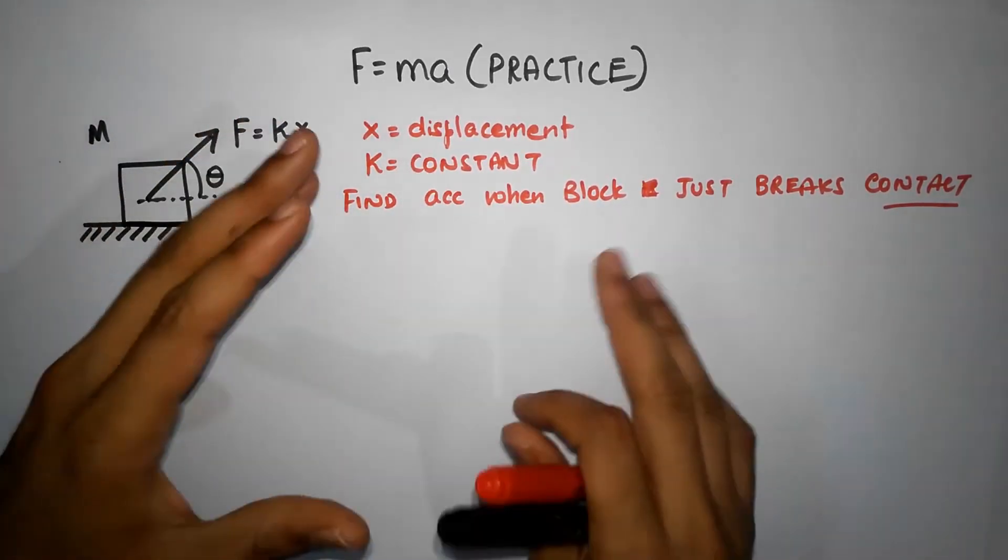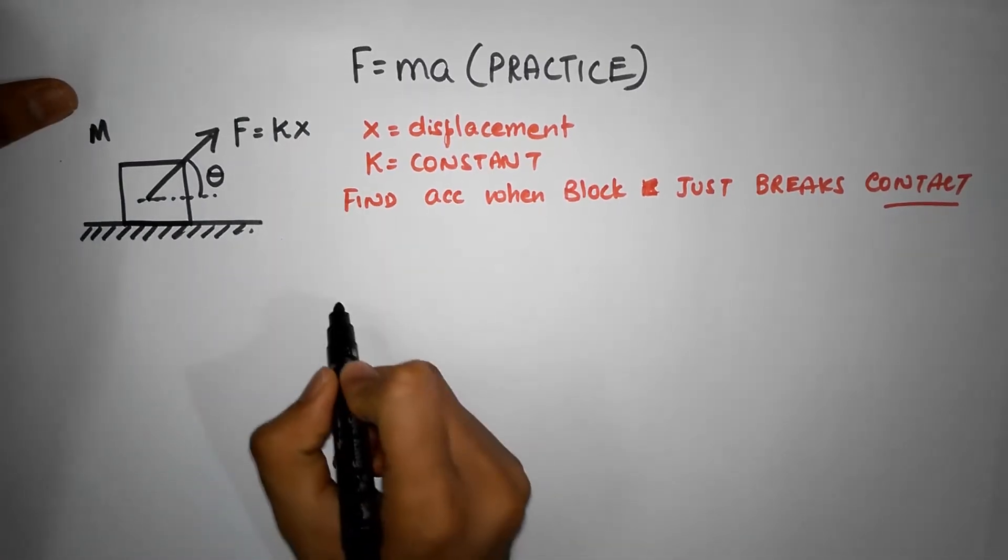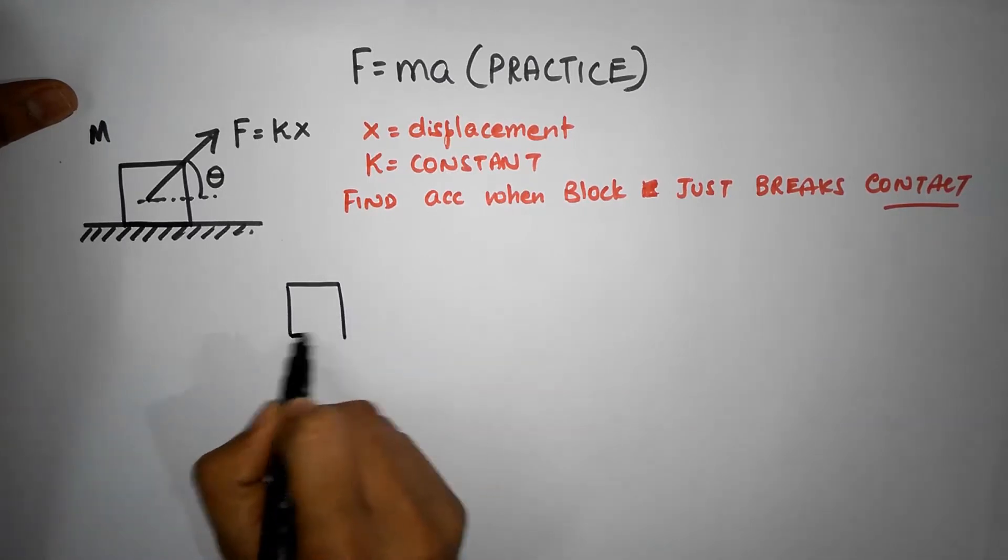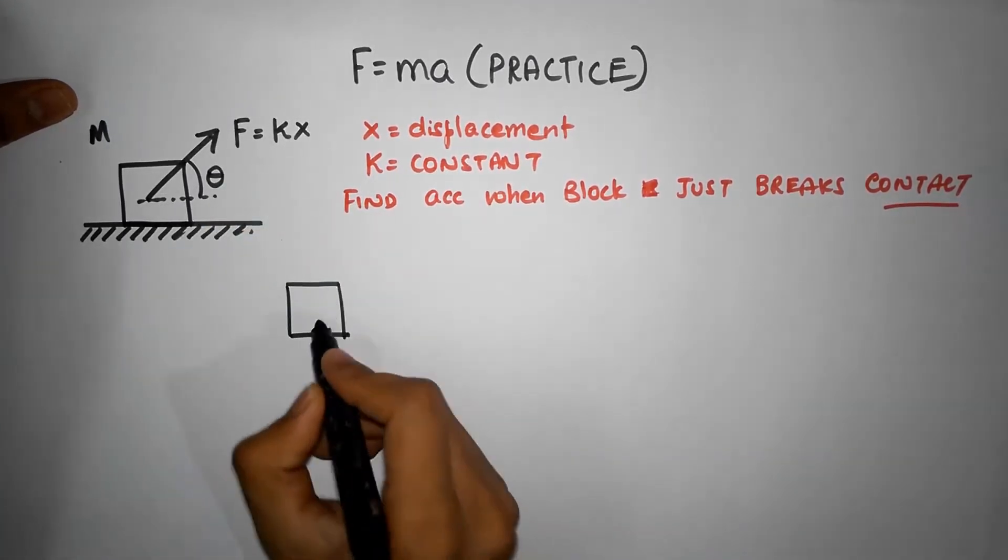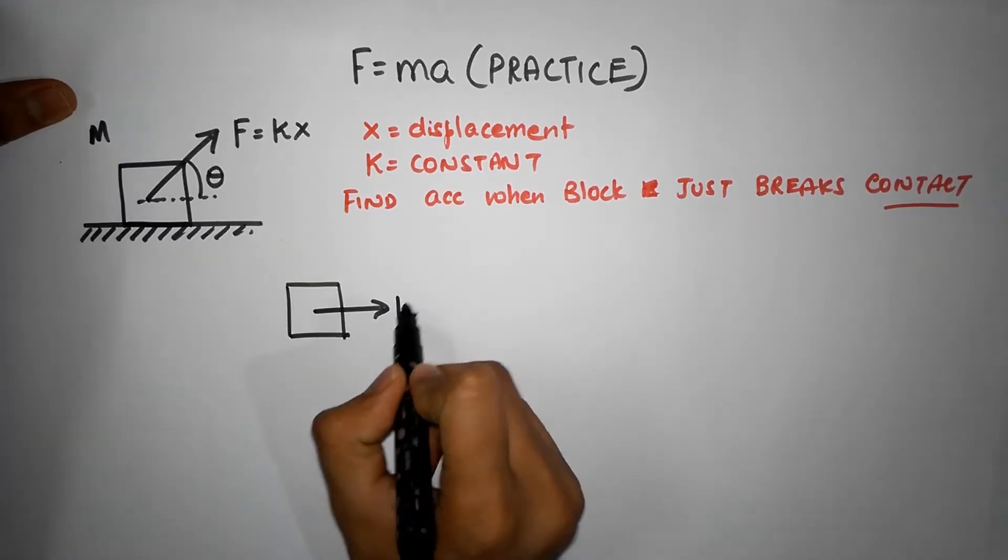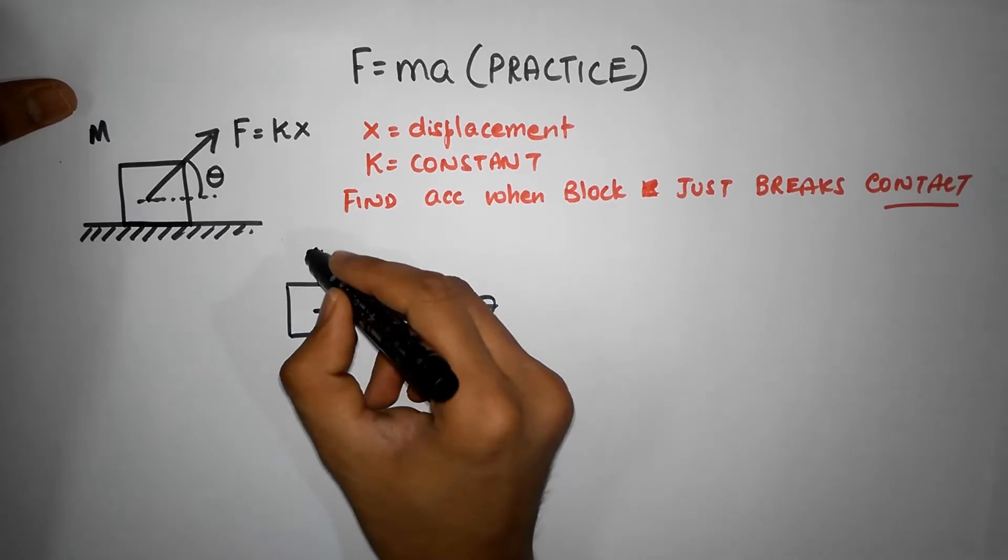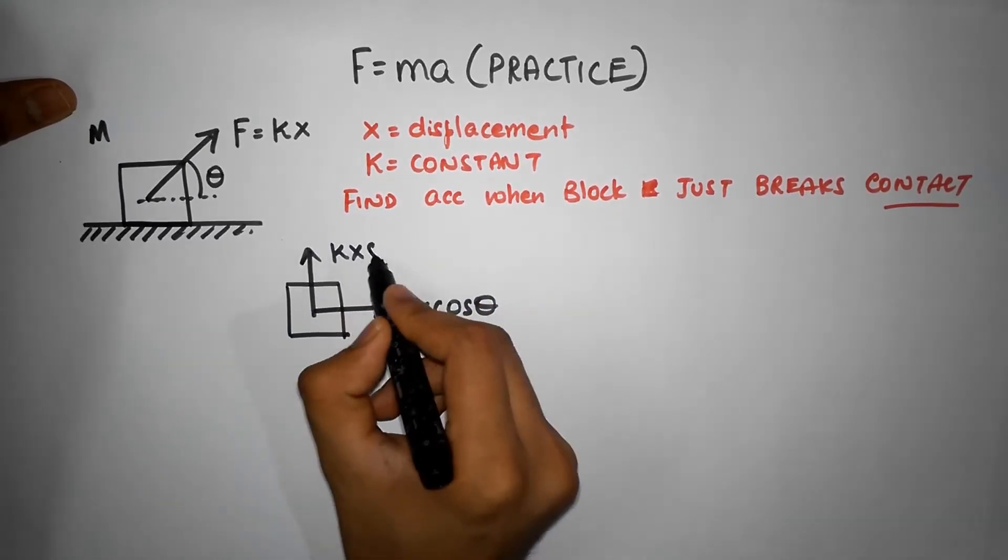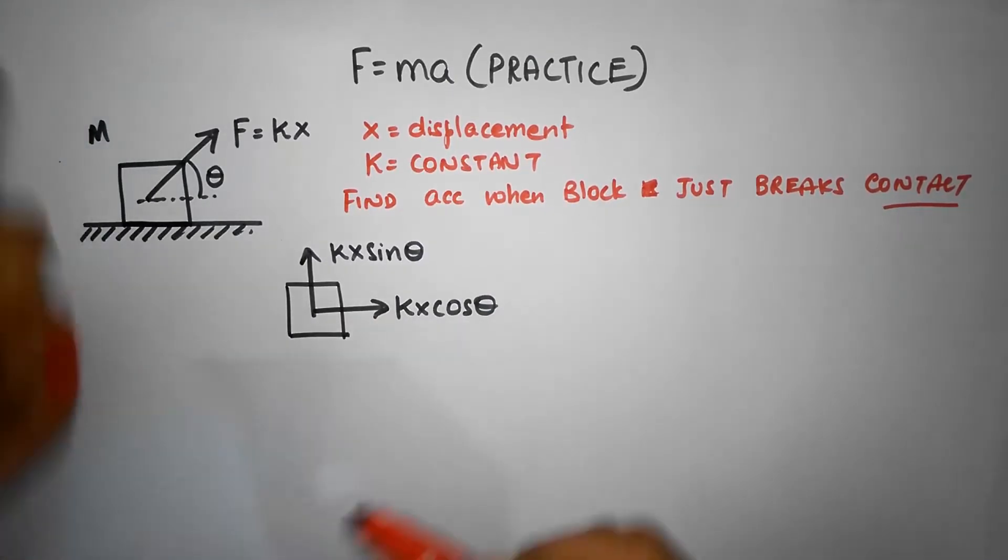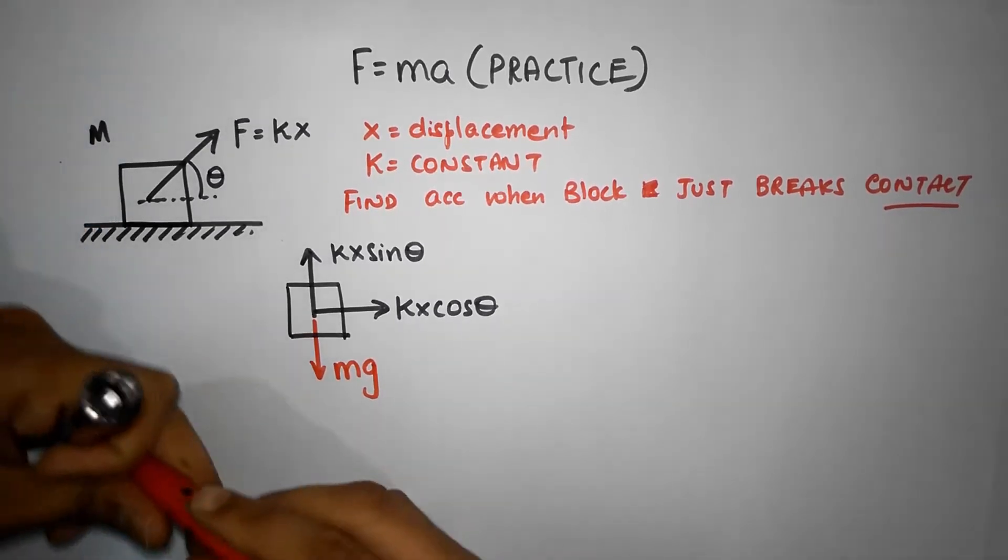This is sort of like a continuation of the last problem we did. Let's resolve the forces. How many forces do we have on the block? There's one force which I'm going to resolve: one this way which is the cos theta component, so it's kx cos theta, and one going this way which is kx sine theta. There's the usual gravity and also a normal force.